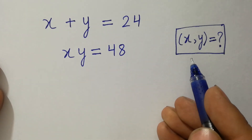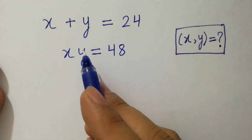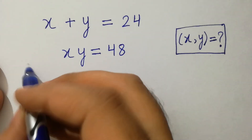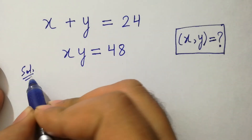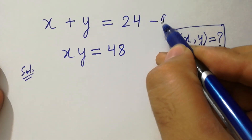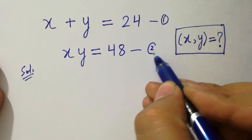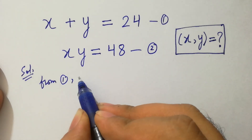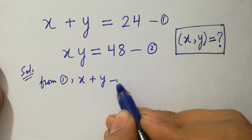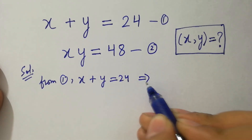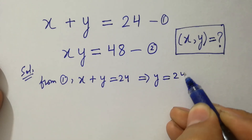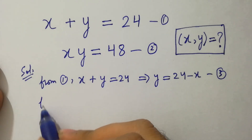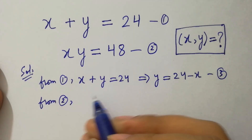Hello friends, find the value of x and y if x plus y equal to 24 and x times y equal to 48. Let's have a solution. Say this is the first equation and this is the second equation. From the first equation, x plus y equal to 24, so y equal to 24 minus x. Say this is the third equation.